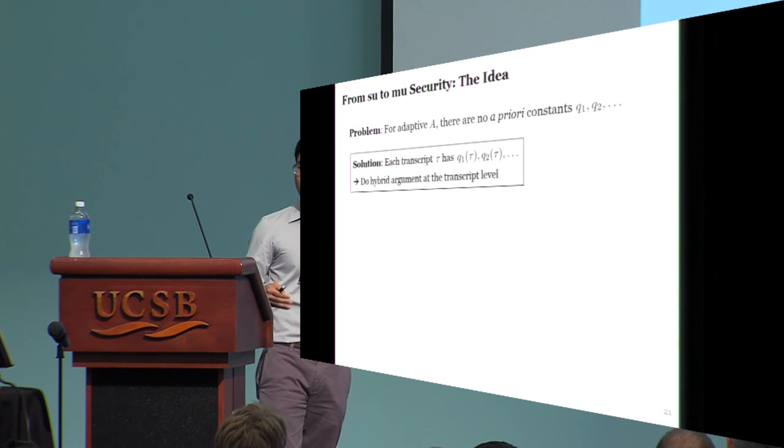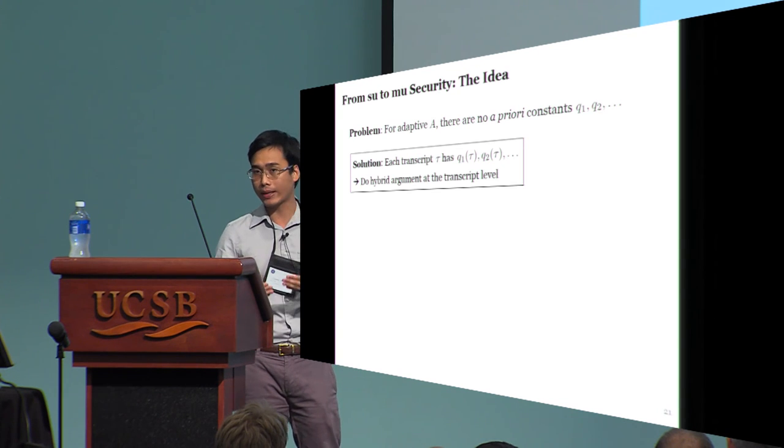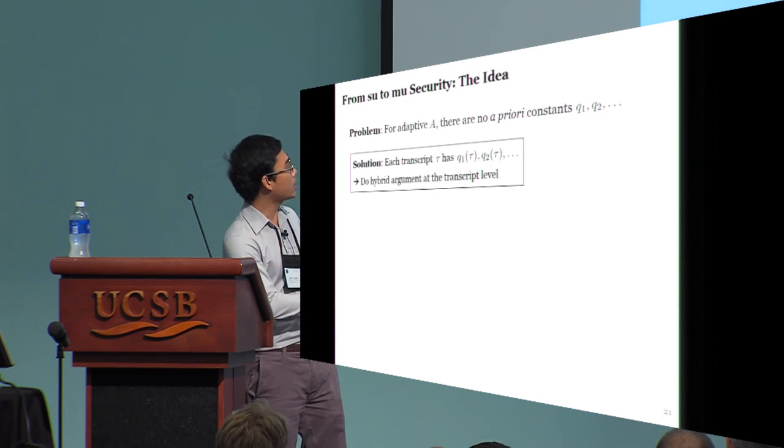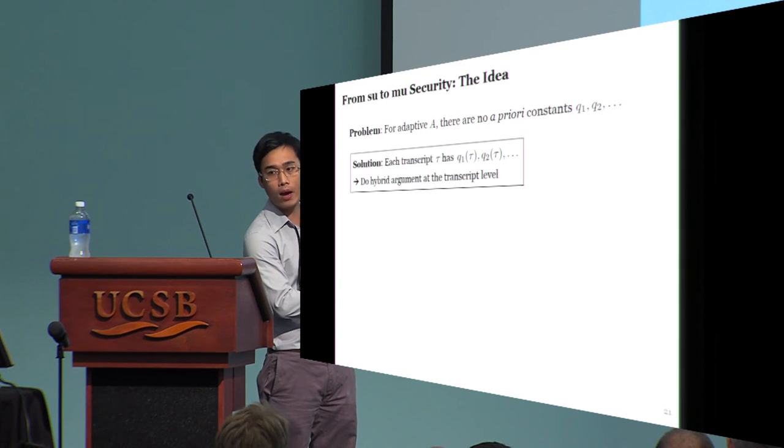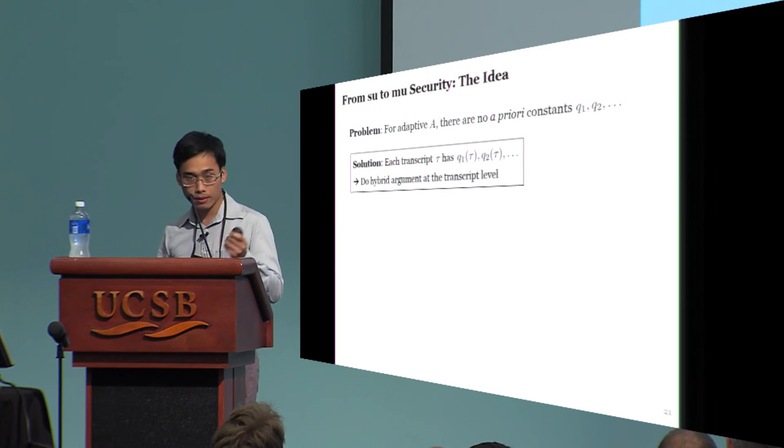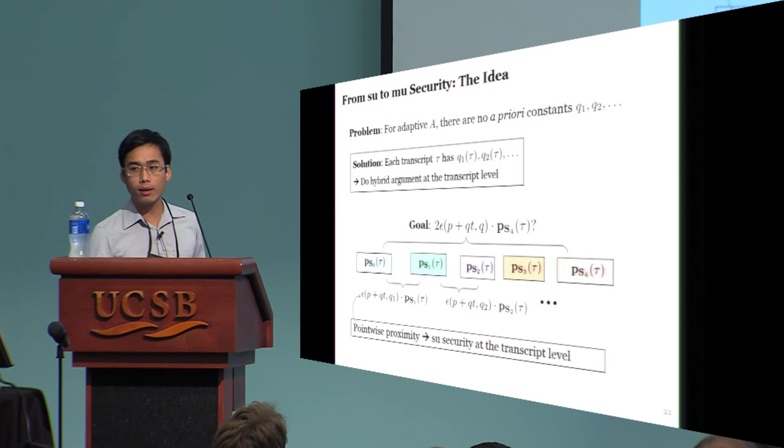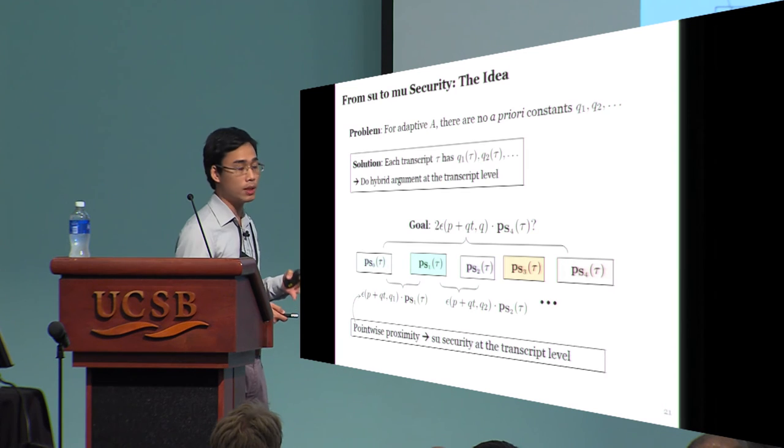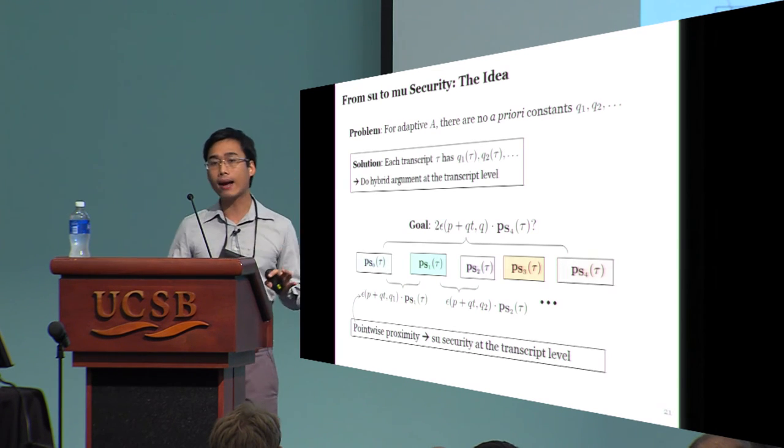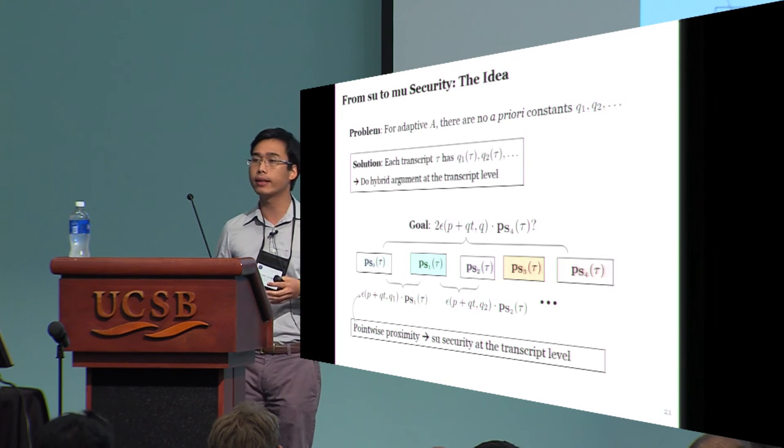So intuitively, at the high level, all we need to do is to repeat the previous hybrid argument, but at the transcript level, so that we can exploit these numbers, Q1 tau, and so on. But in order for that to work, you need some sort of single-user security bound at the transcript level. But that is exactly the pointwise proximity requirement.